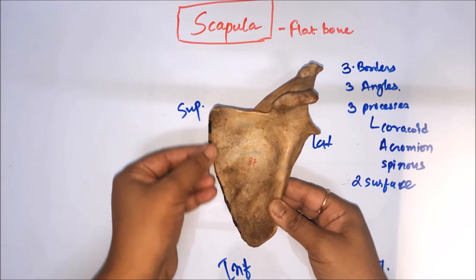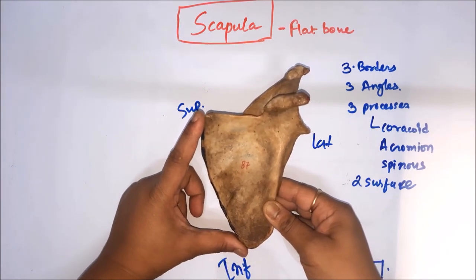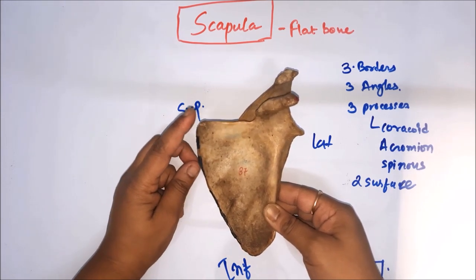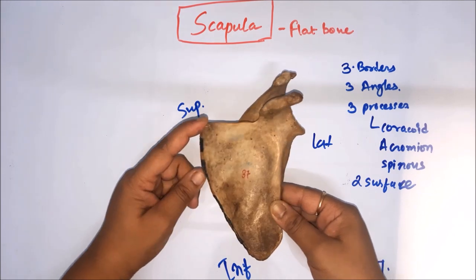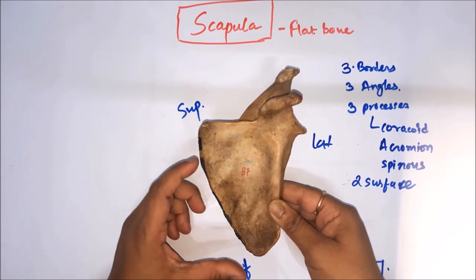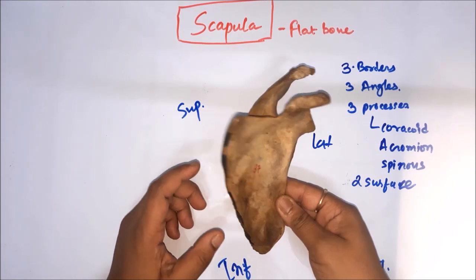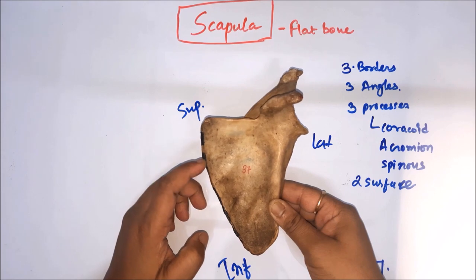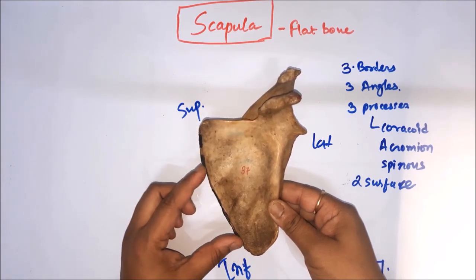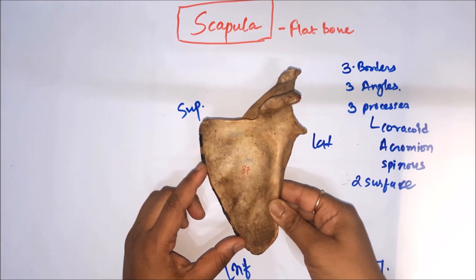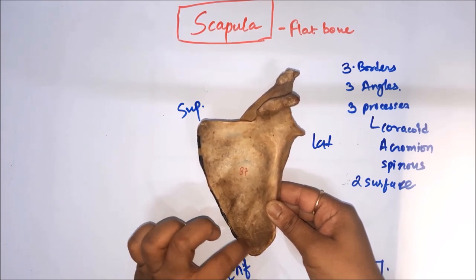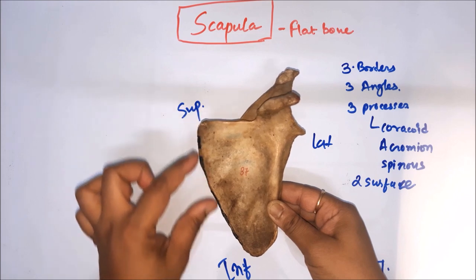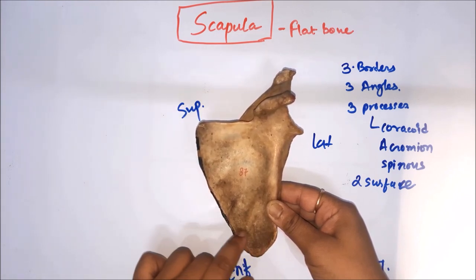The medial border, on its costal surface towards the anterior side, gives attachment to the serratus anterior. Serratus anterior arises as eight digitations: the first digitation is from the superior angle to the spine of the scapula; the second and third digitations are from the spine to the inferior angle; and the remaining five digitations — four to eight — are present at the inferior angle.